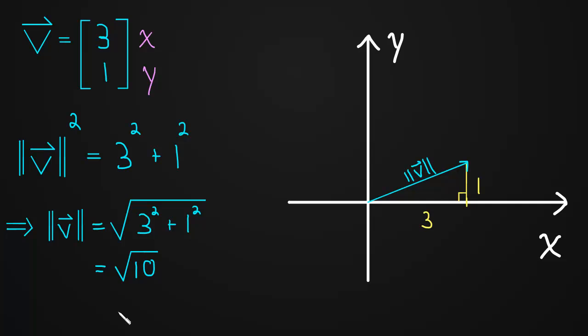And it's really just as simple as that. All we're doing when we're finding the length of a vector is finding the hypotenuse of a right triangle using the Pythagorean Theorem. Okay, let's look at another example.